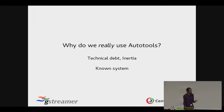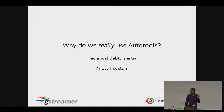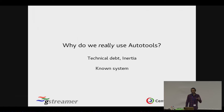Why do we use it? It's mostly these three things: technical debt, because it's there and it's been around for a while; it's way too much work to move GNOME off of AutoTools; inertia, similar in many ways; and it's a known system — we all know how it works, we can make it work with our systems, and libraries which use it can be used with other things.